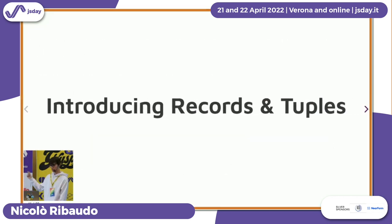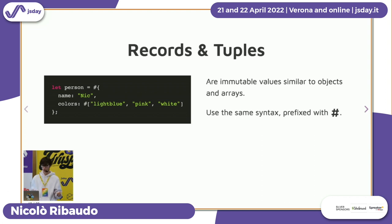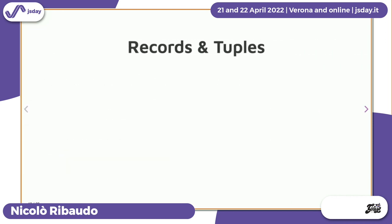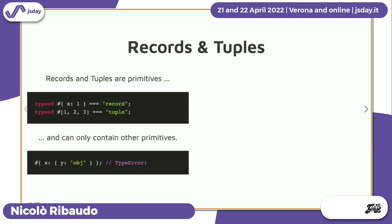This is where the Records and Tuples proposal can help us. Records and tuples are immutable values similar to objects and arrays — they even use the same syntax, just prefixed with a hash. The hash is used simply because it's one of the few characters still available for new JavaScript features. They are compared using the classic JavaScript equality operator by comparing their internal values, rather than just checking if the reference or pointer is the same, which is what happens with arrays or objects.